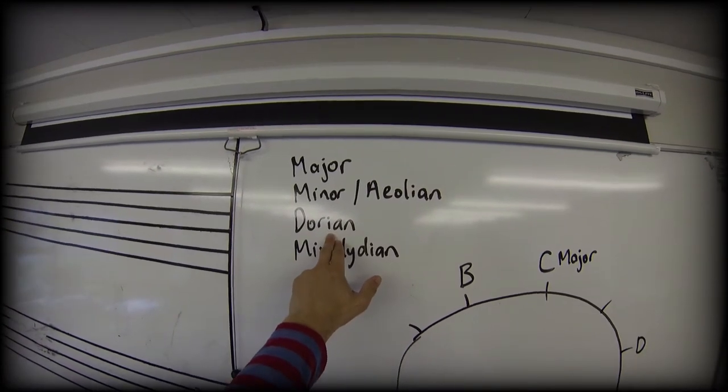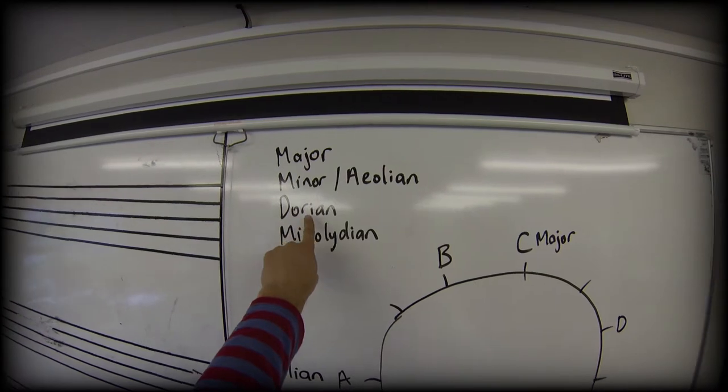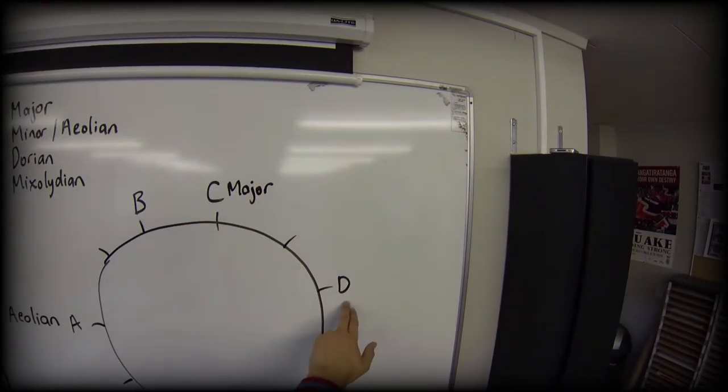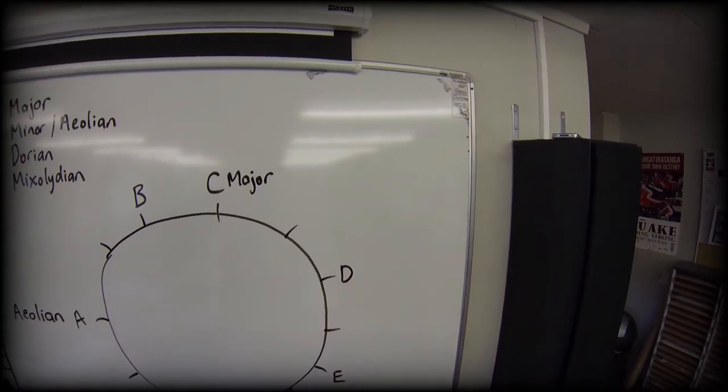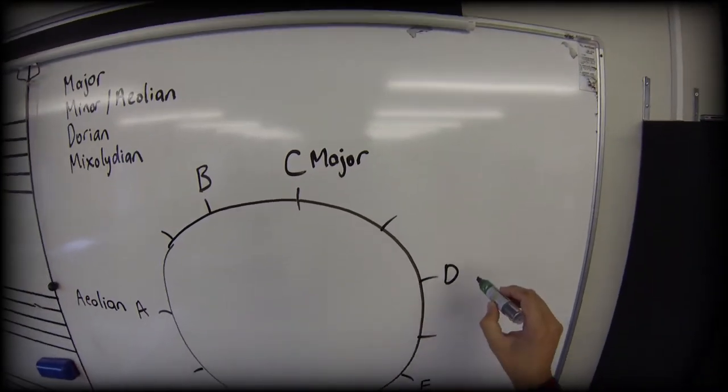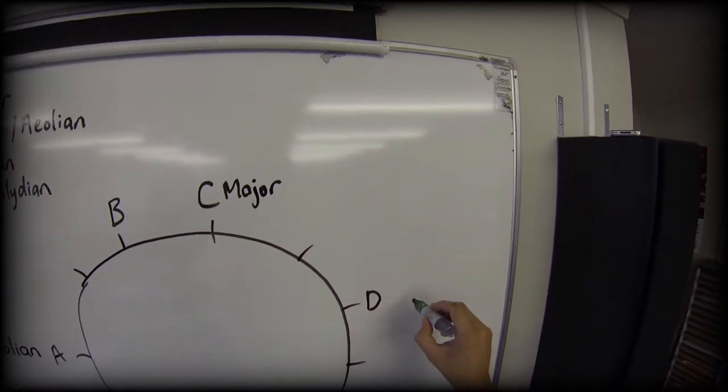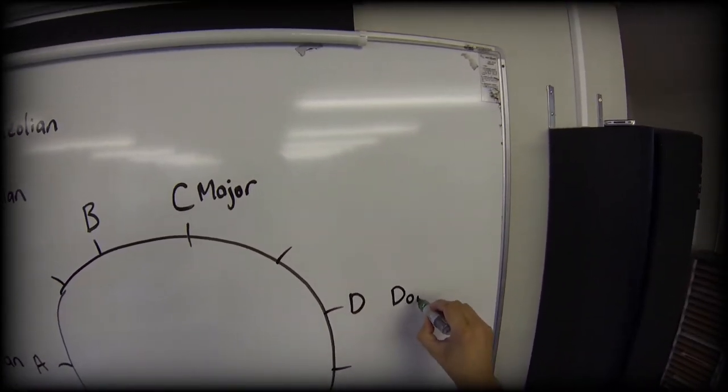And again by total coincidence the word dorian starts with a D as does the note that we start on in this case to make a D dorian out of our notes here on this clock. So I'm going to write dorian.